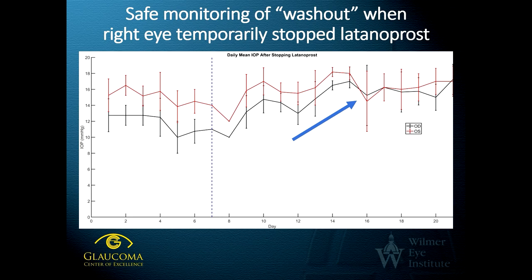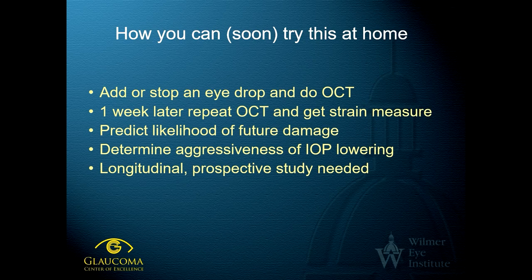Some have questioned whether washing out of drops is a safe method for measuring strains, but we can now do home eye pressure measurements using iCareHome for patients who stop their eye drops, and we will know within one day when pressure has risen to a level allowing a second OCT image, then re-initiate the eye drop. This will be a safe and effective way to test lots of glaucoma patients — in fact, any glaucoma patient under medical therapy. Soon, by temporarily adding or subtracting eye drops and doing two OCT images, we'll have a potential biomarker predicting the likelihood of future damage, which is extremely important because some patients have an aggressive form of glaucoma while others are relatively stable. A longitudinal prospective study is needed and we hope to have funding for that quite soon.